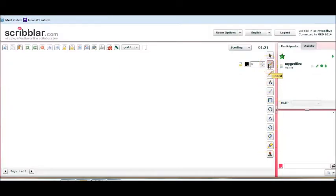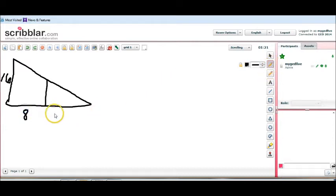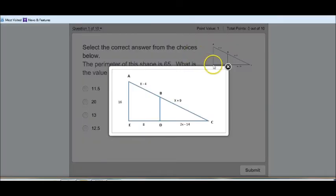I'm going to get my pencil here and just kind of draw that shape. Excuse my drawing. I'm not an artist, I'm a teacher. That side is 16. Right here we got a line coming down there. That right there is 8. And then we have 2X minus 14. And then we have X minus 4. And then we have X plus 9. Now we're going to go back to the question here. I basically have drawn this shape on the board so we can work with it.